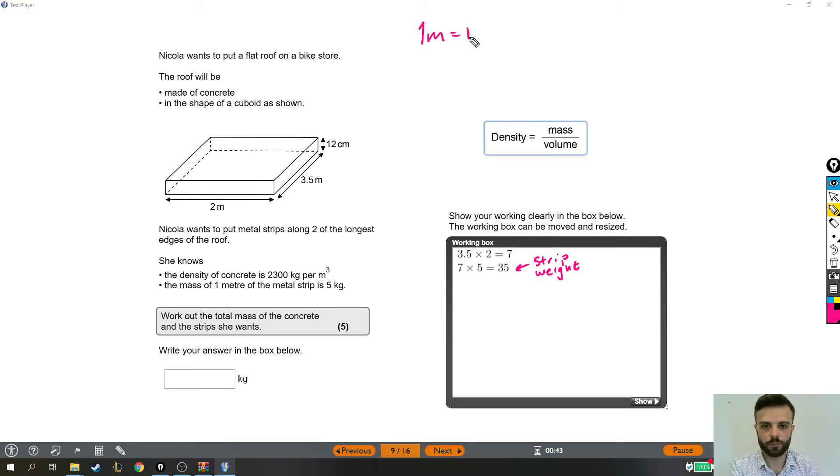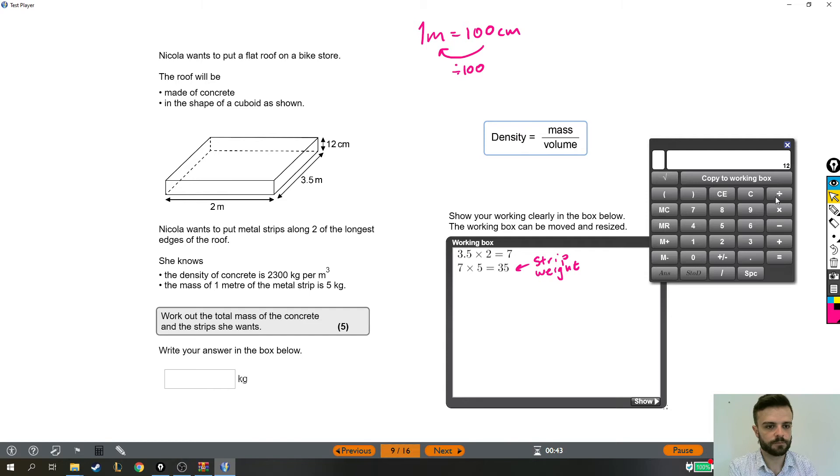Now we know that one meter is 100 centimeters and we're going from centimeters into meters, which tells me I need to divide by 100. So I need to take my 12 centimeters and divide it by 100. Divide it by 100 is 0.12. So every time we see 12 centimeters, we mean 0.12 meters. It's going to be the same unit so we can work out the volume.